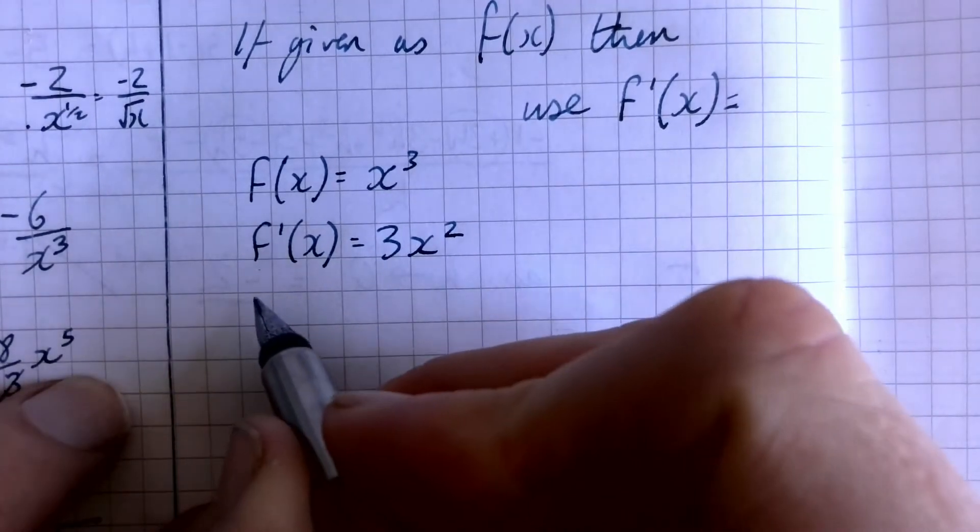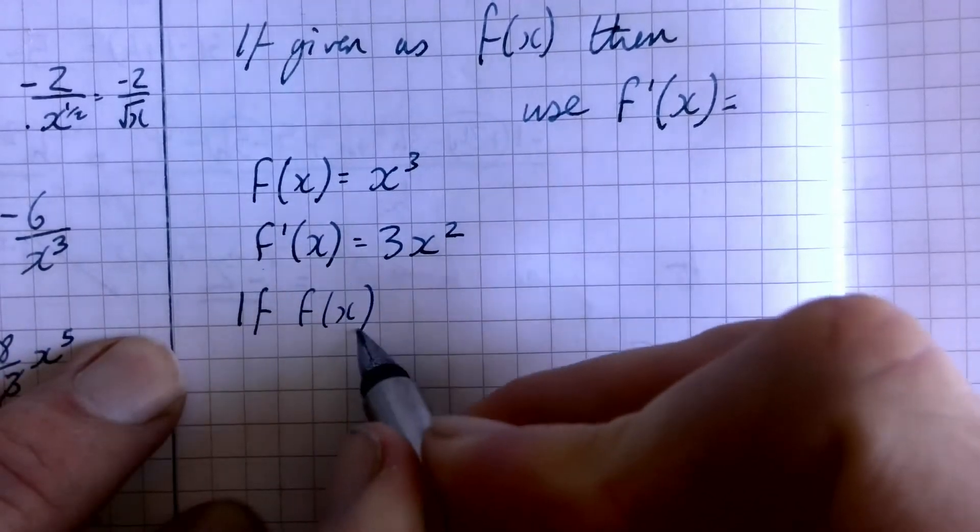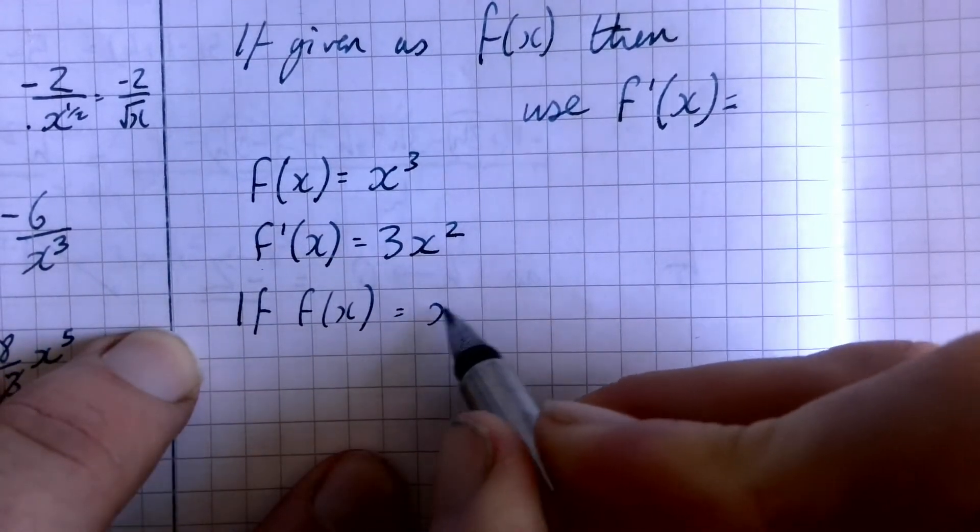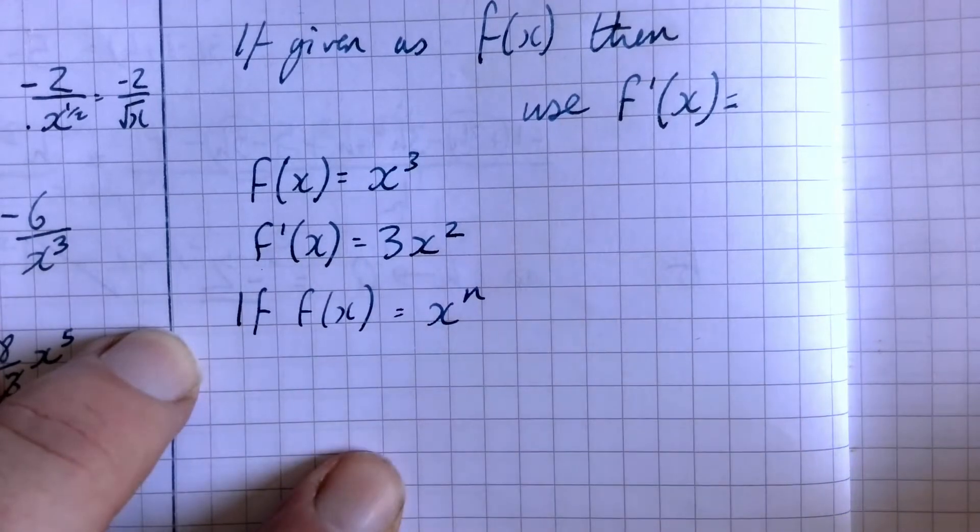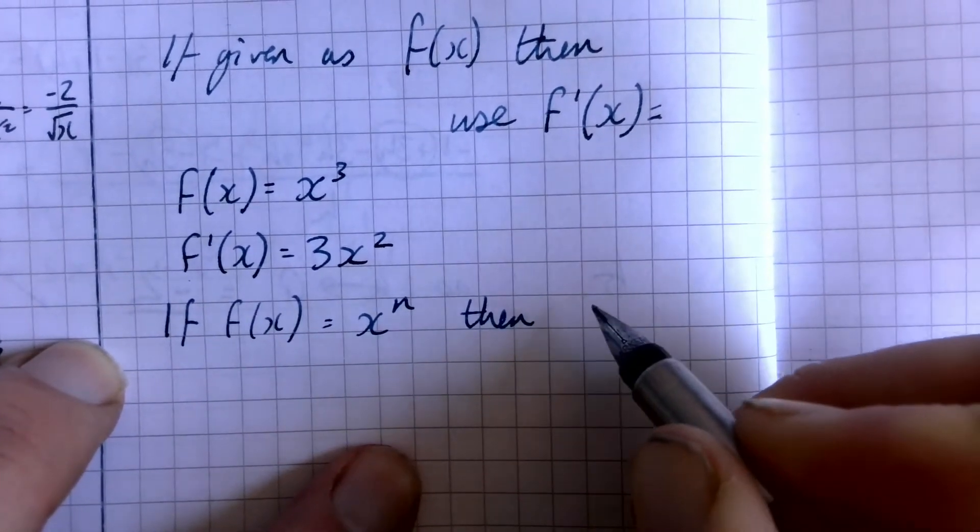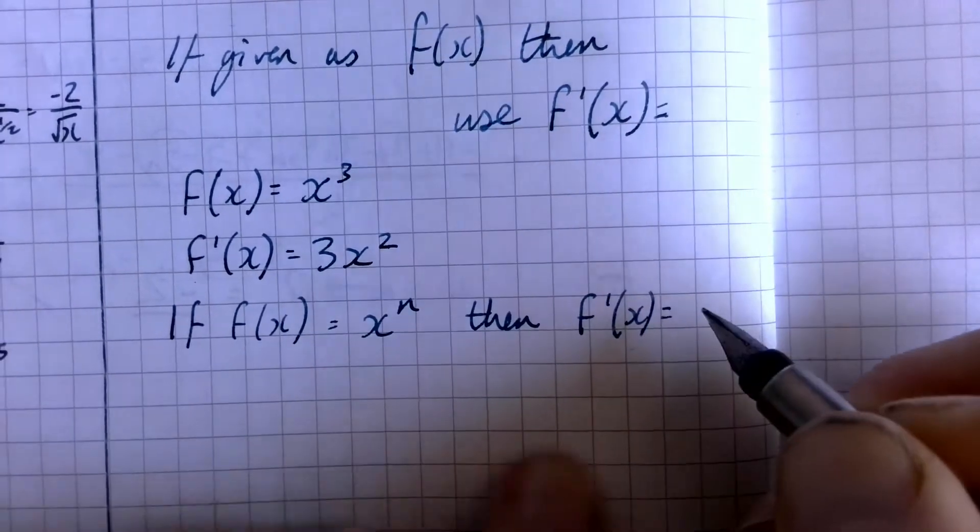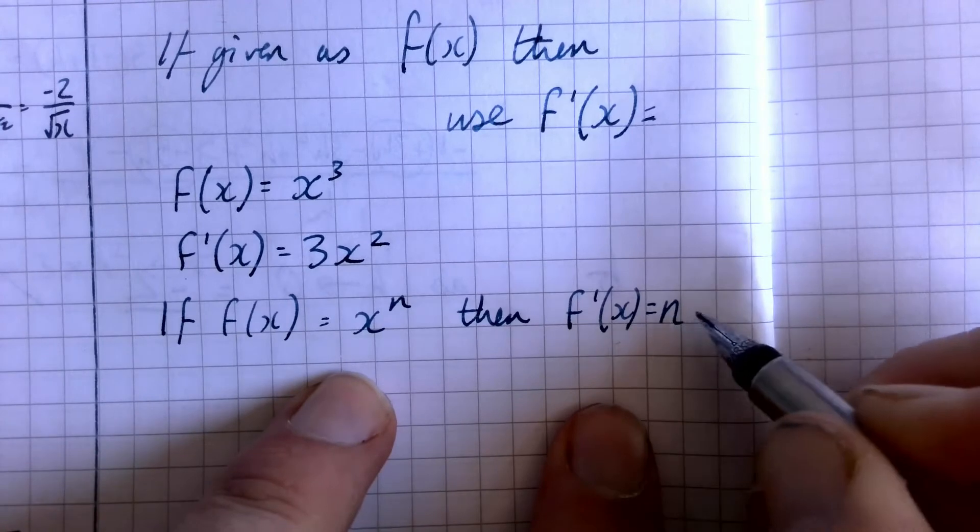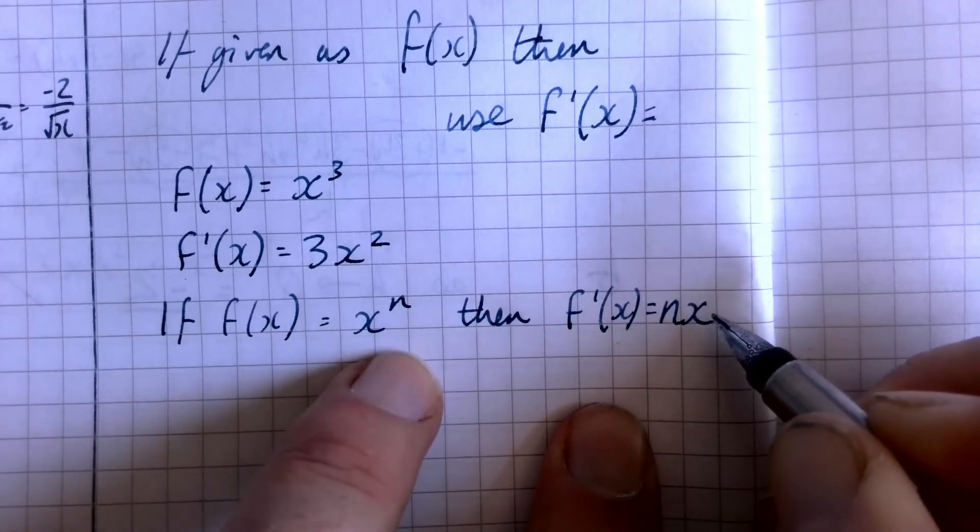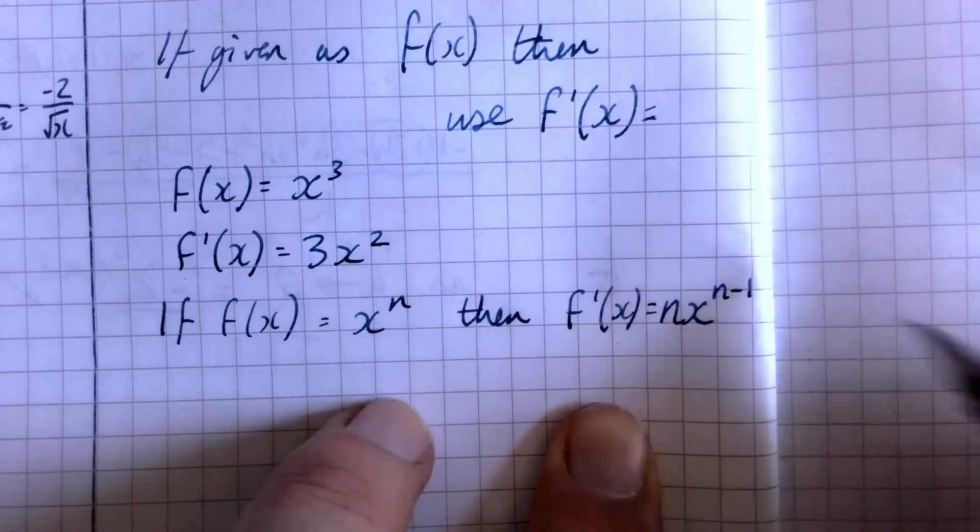So if you'd like to, if you could write this down as well. So if the function of x is x to the power n, then the derivative f dash x is going to be n times x to the power of, we take one of that.